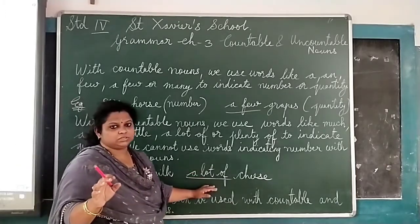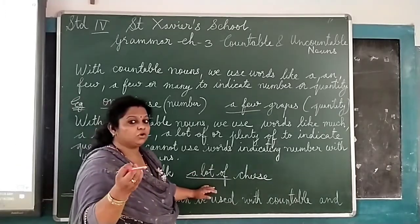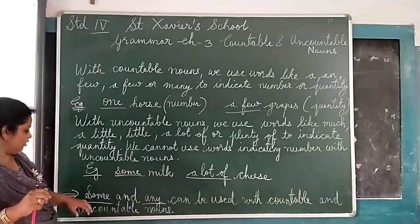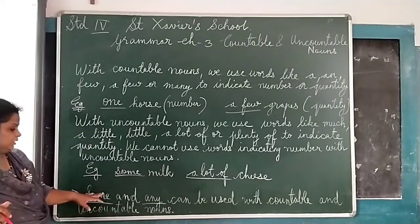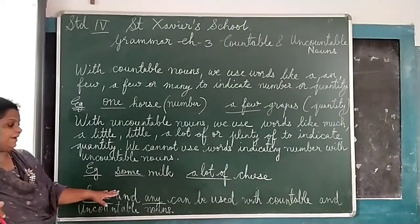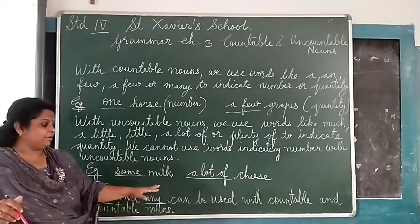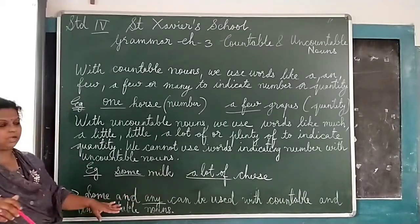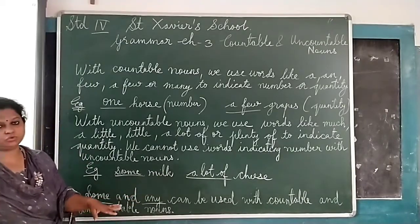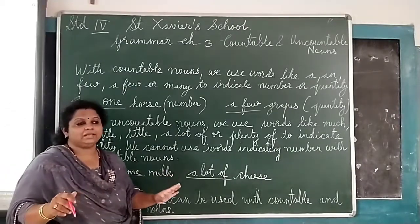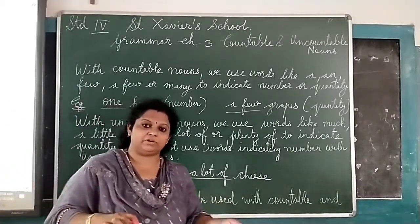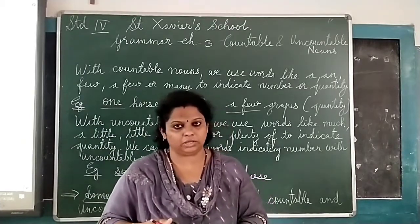One more: 'some' and 'many' can be used with both countable and uncountable nouns. So 'some' and 'many' we can use with both countable and uncountable nouns.